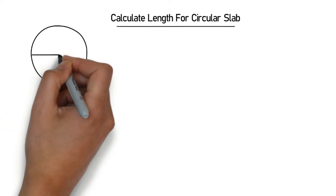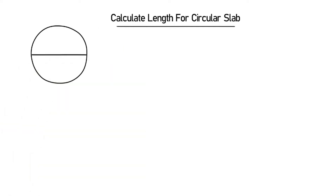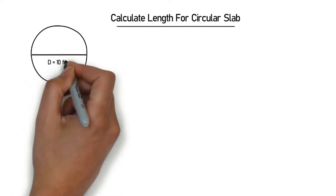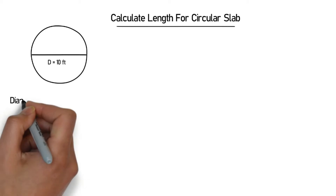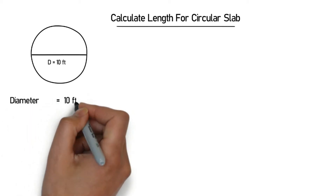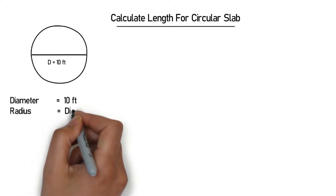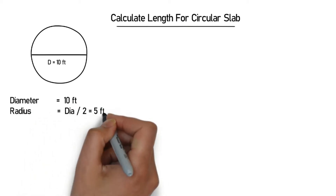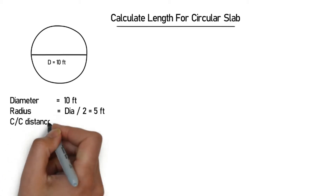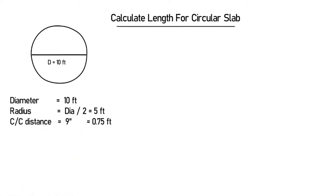The circular slab has a diameter of 10 feet. So the data is: diameter = 10 feet. Radius = diameter divided by 2 = 10/2 = 5 feet. The center to center distance is 9 inches. Converting to feet by dividing by 12 gives 0.75 feet. Now we have the data to find the cut length.